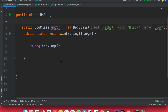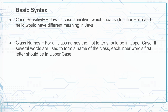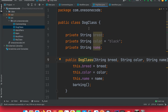Now let's talk about naming conventions. For class names, the general Java guideline is that the first letter should be uppercase. If several words are used to form a class name, each inner word's first letter should also be uppercase — as you can see in our DogClass definition.